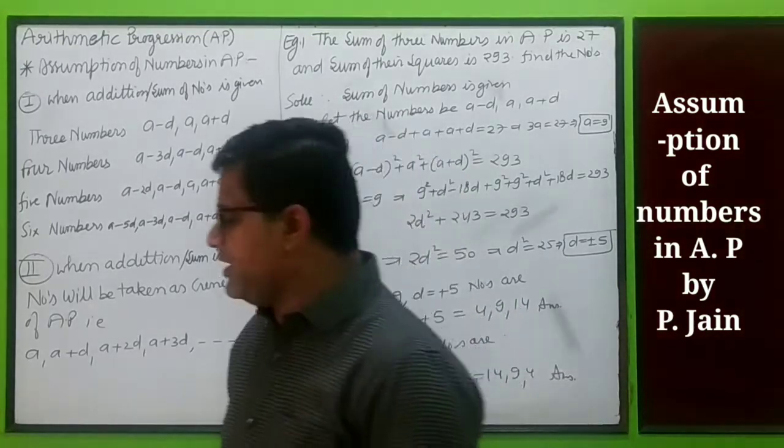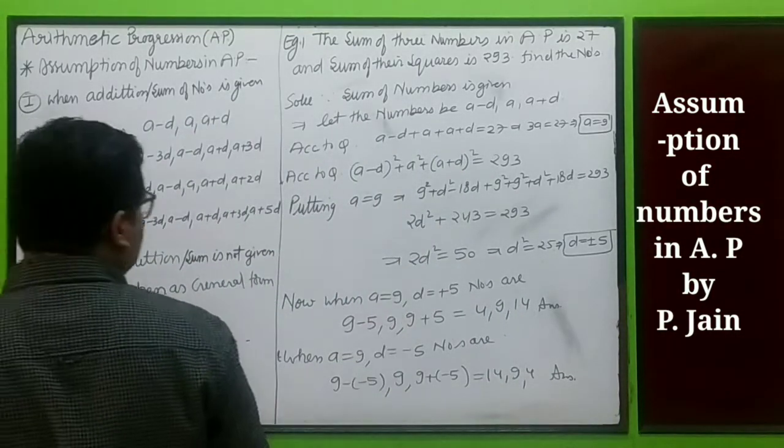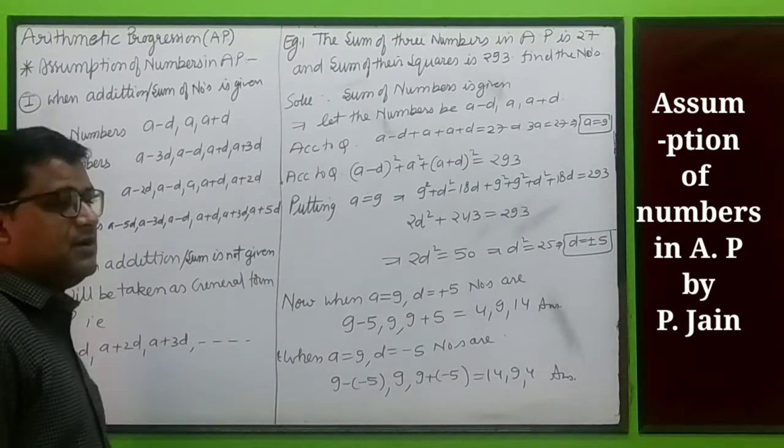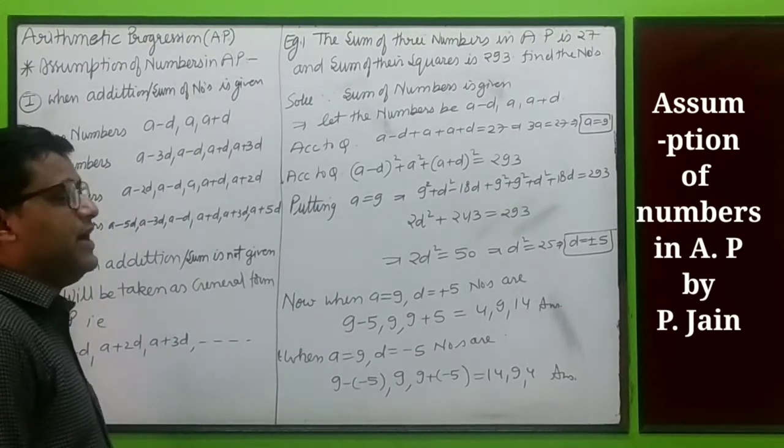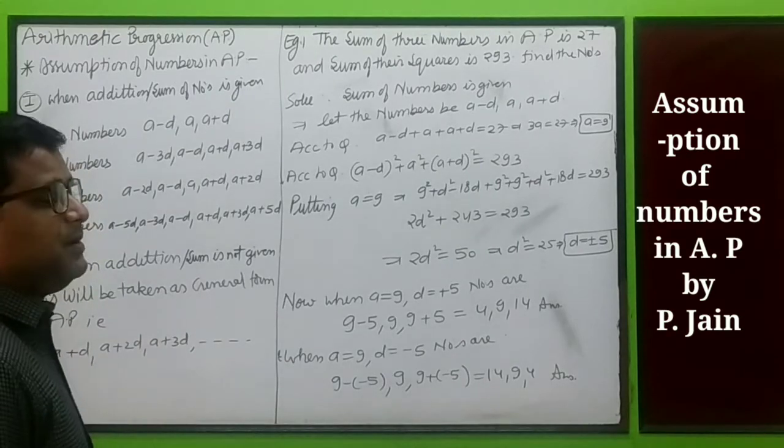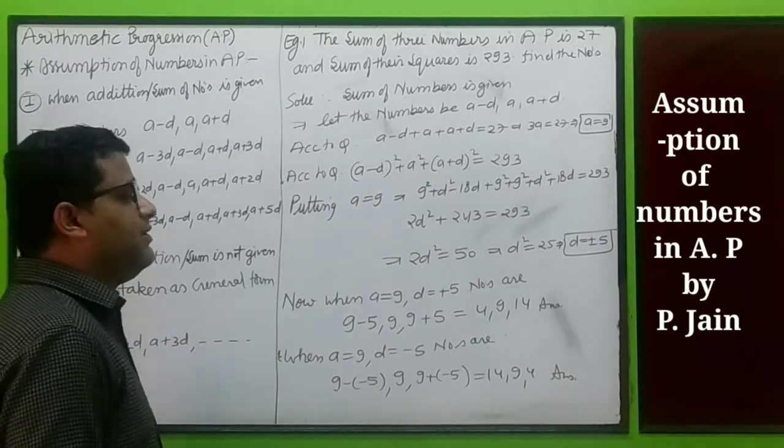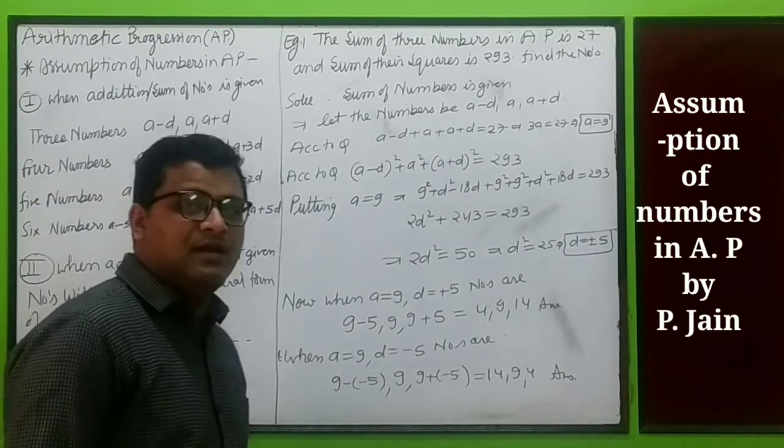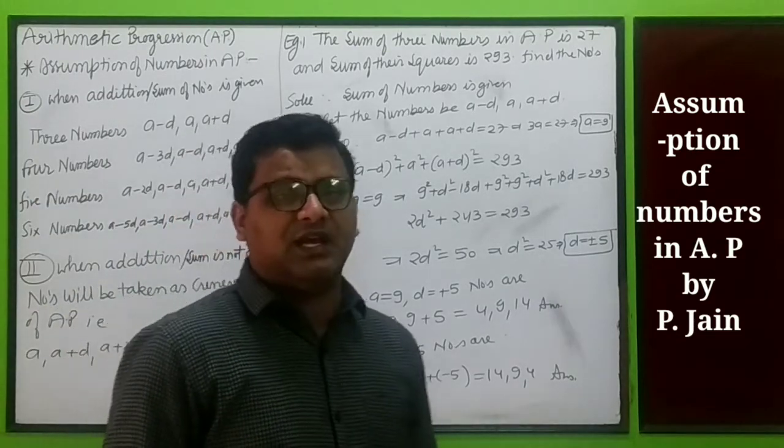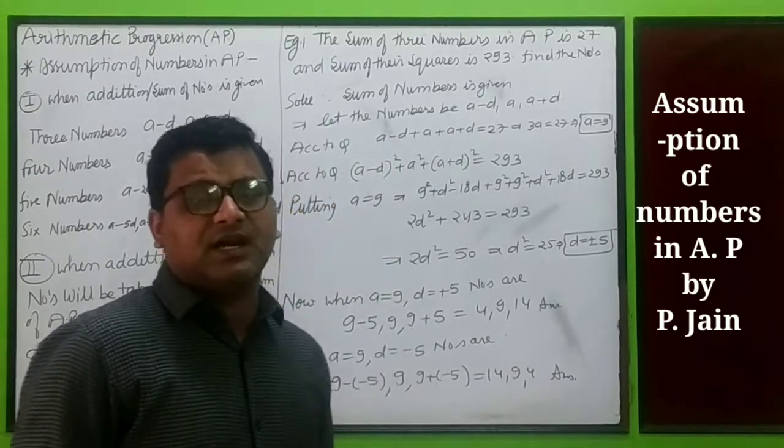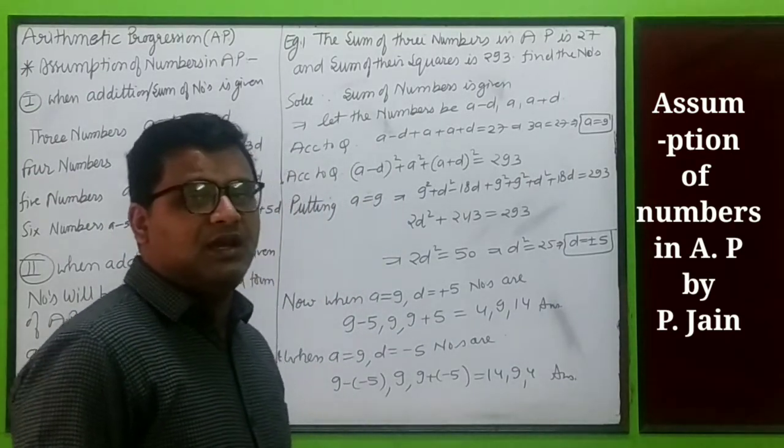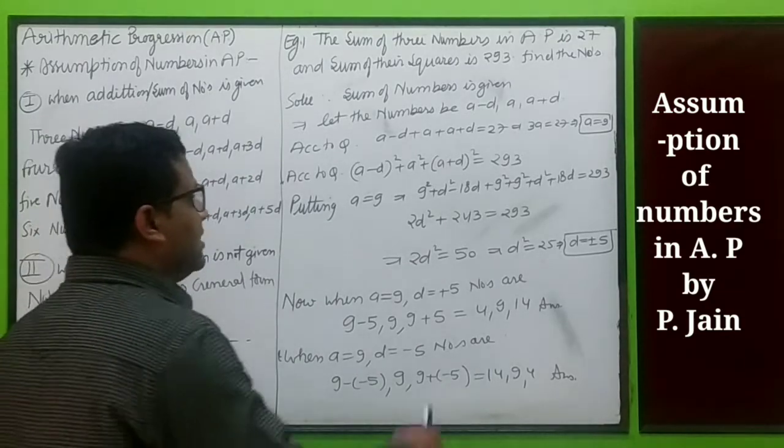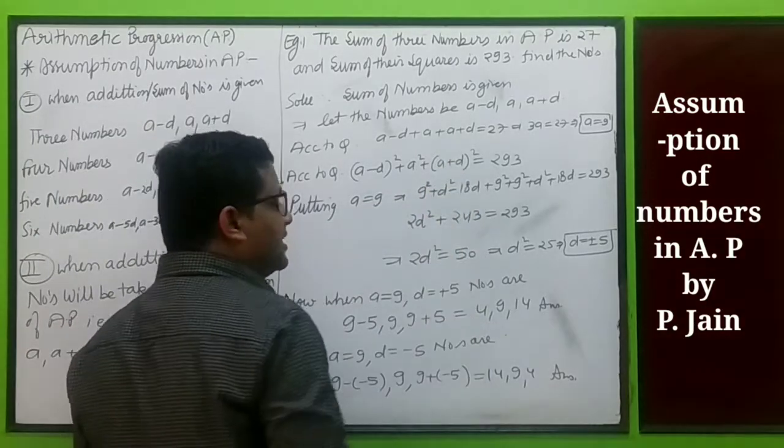Let's take an example. Example one: the sum of three numbers in an AP is 27 and the sum of their squares is 293. Find the numbers. The sum is given, so we take a minus d, a, and a plus d. According to the question, sum is 27, so d cancels.